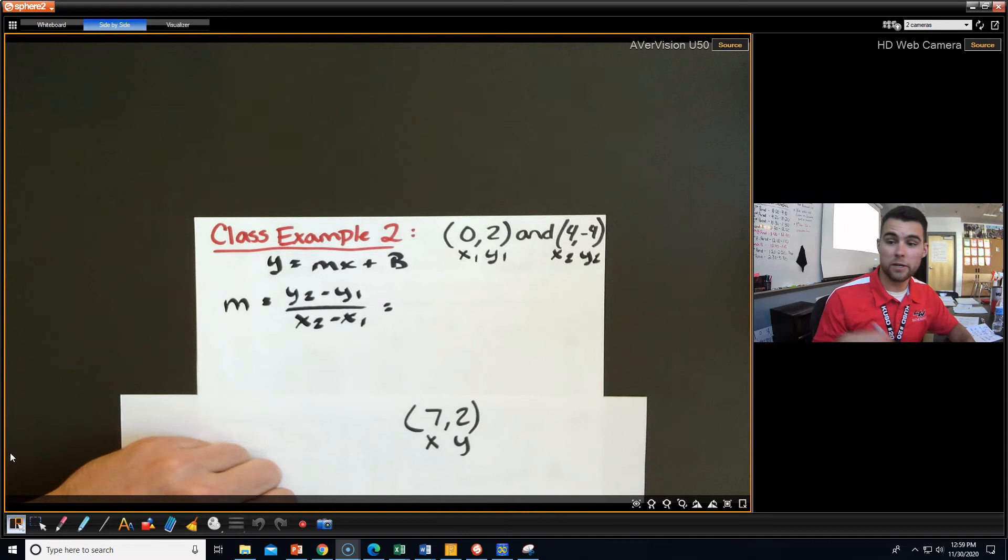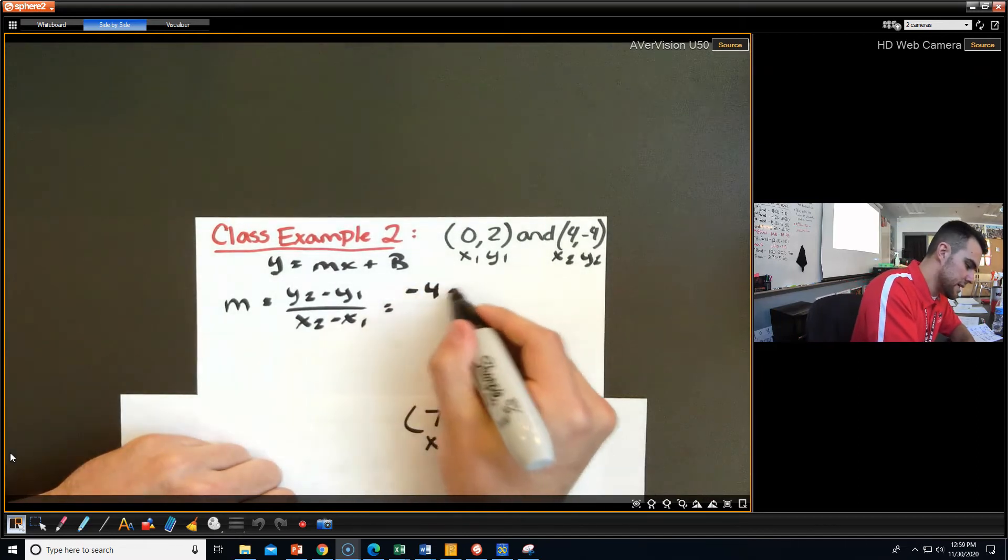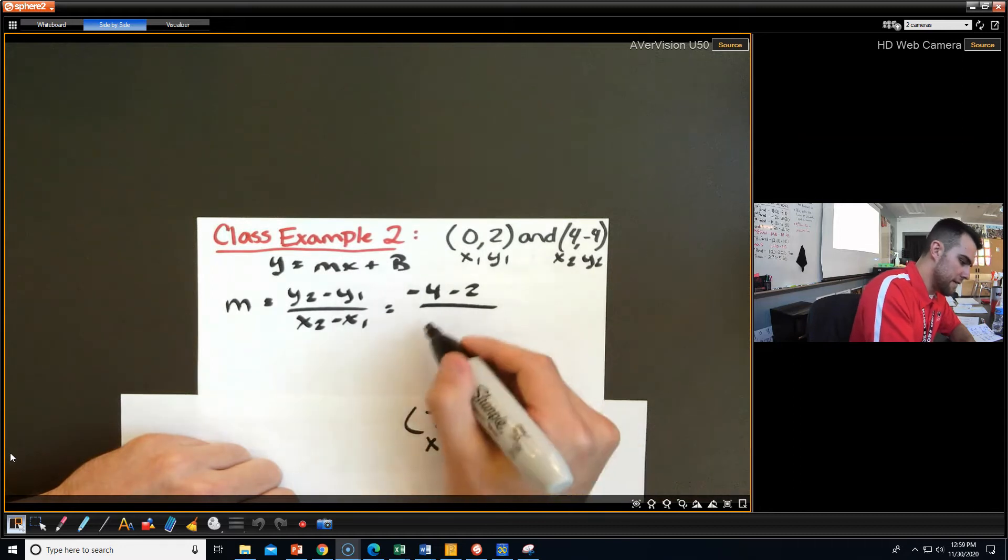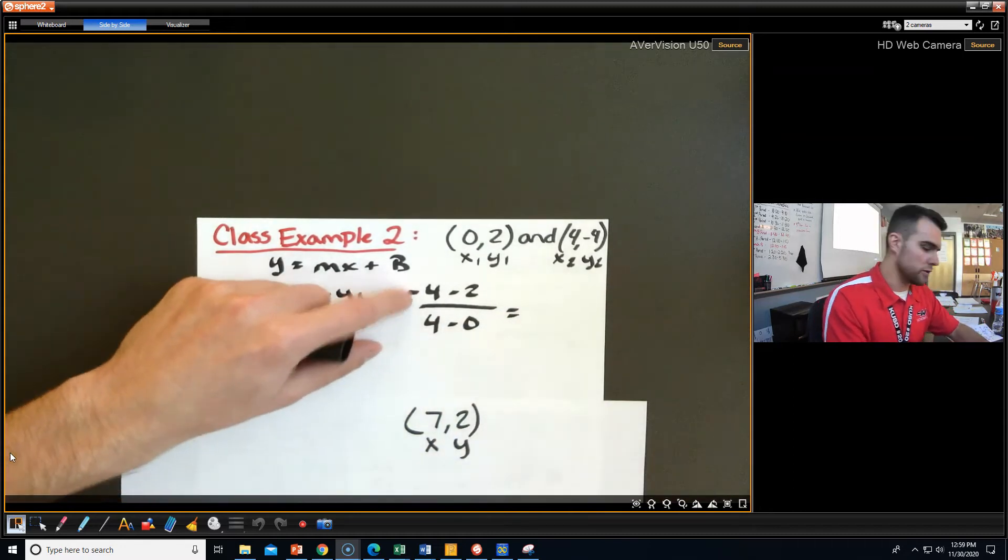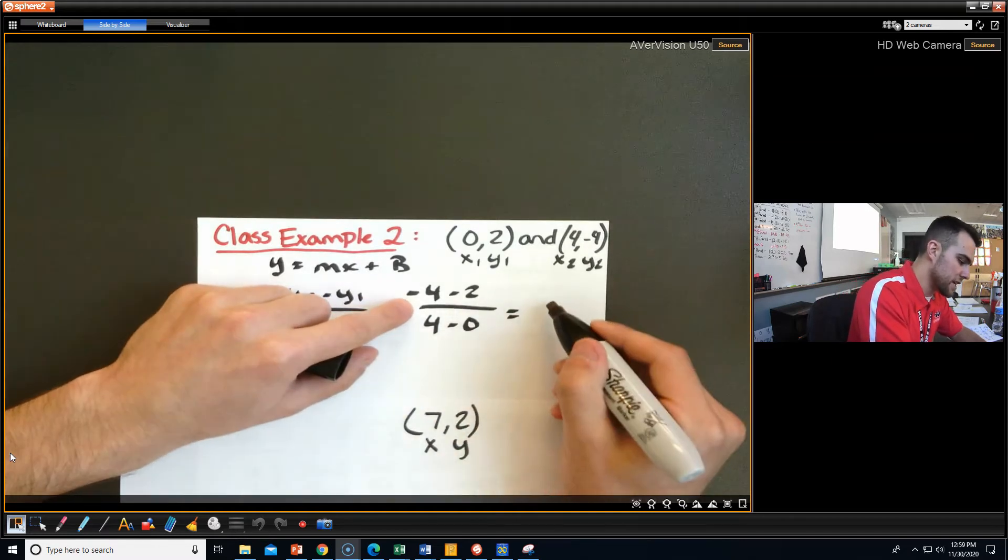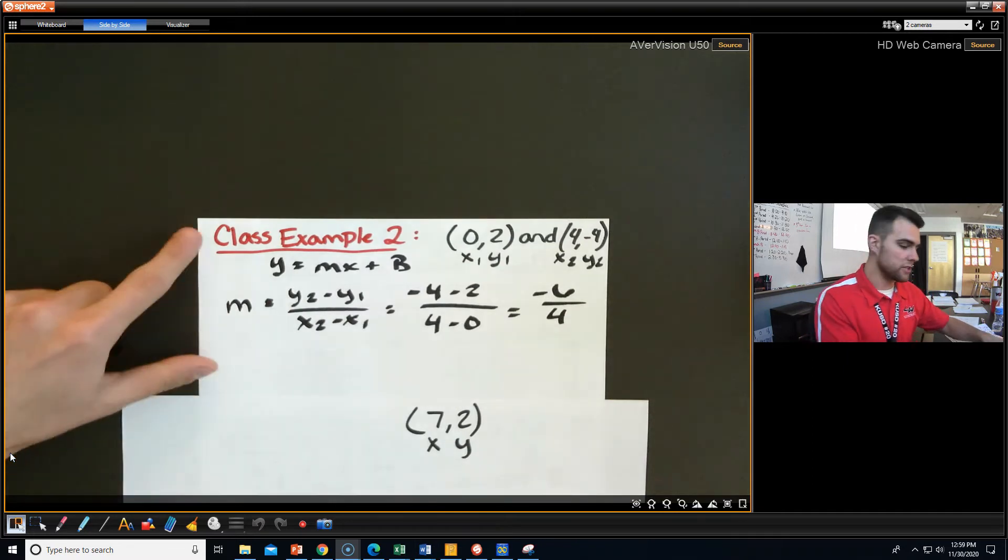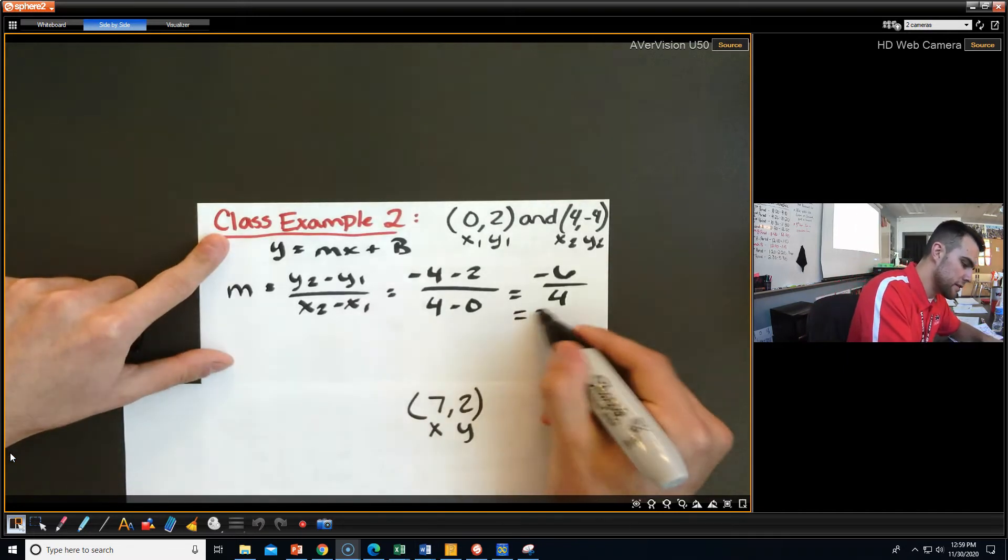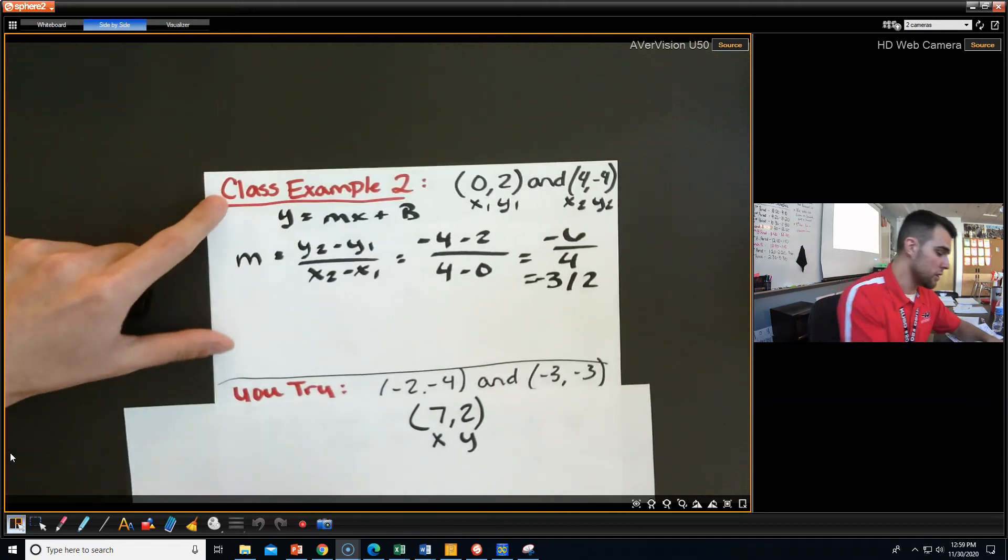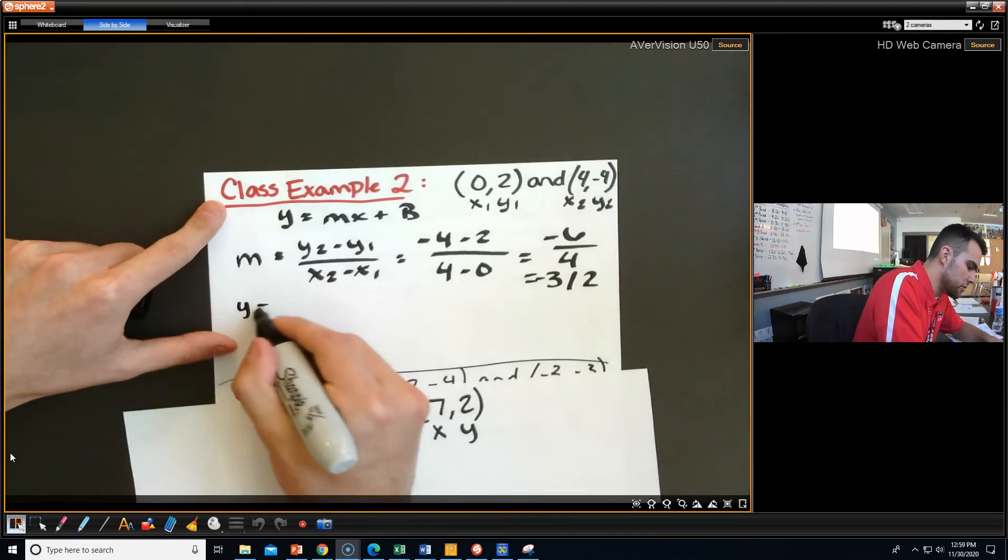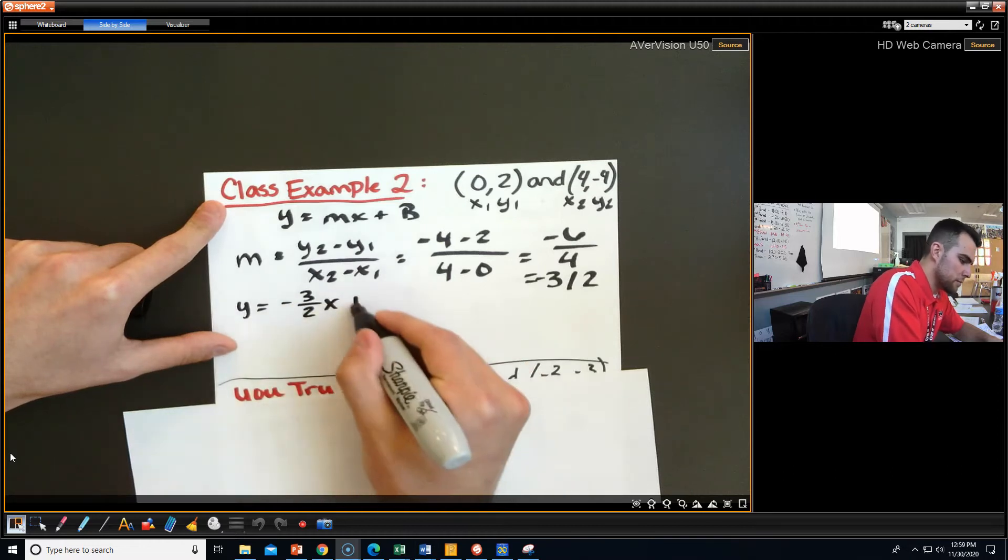Same exact formula. I'm going to plug and chug some stuff. So I'm going to have -4 minus 2 on top. I'm going to have 4 minus 0 on the bottom. And so signs are the same. We add and keep the same sign. So I have -6 over 4. And -6 over 4, that just reduces to -3 over 2. And so that is my slope. So I have y equals -3/2 x plus b.